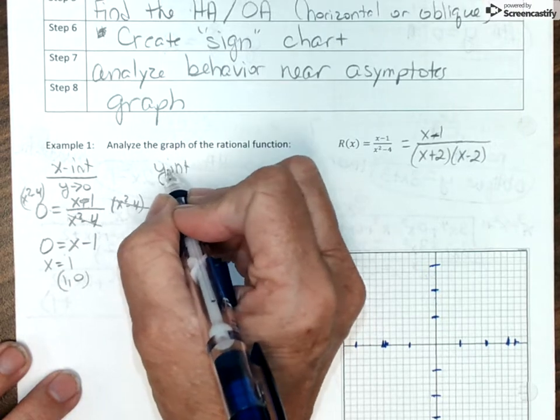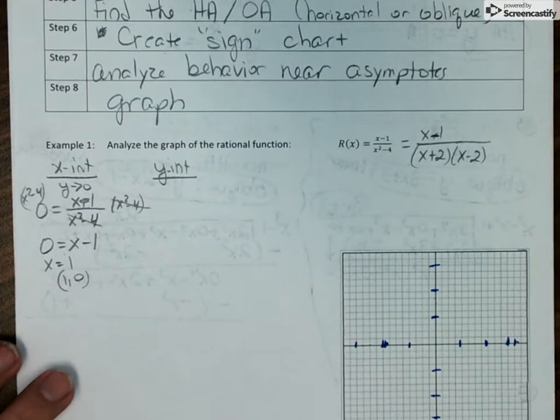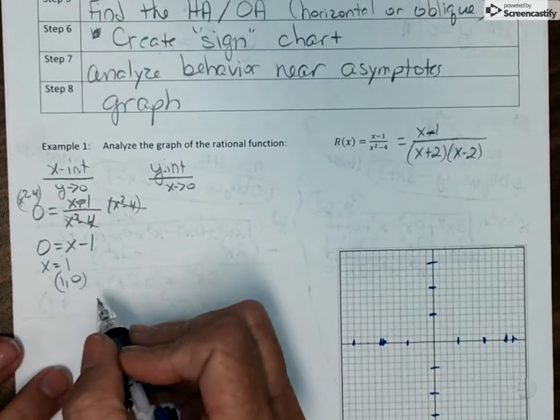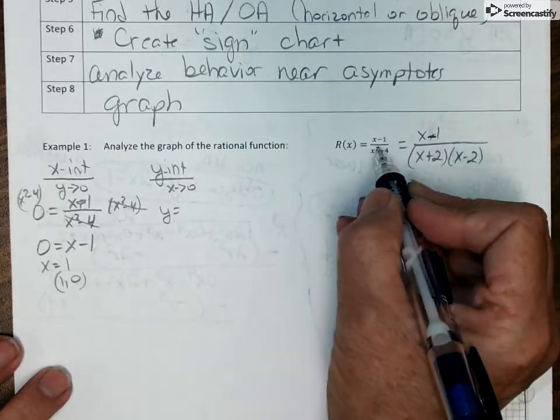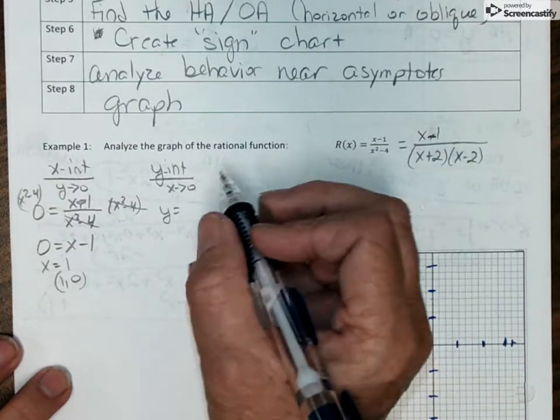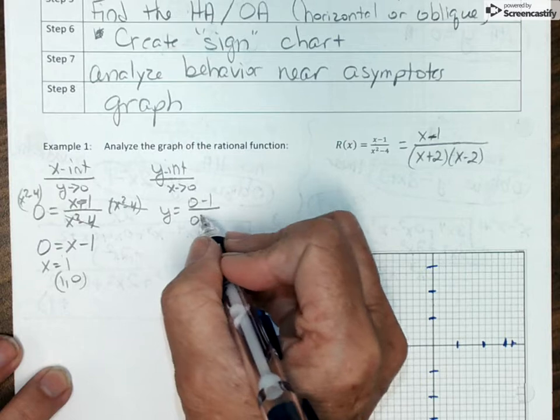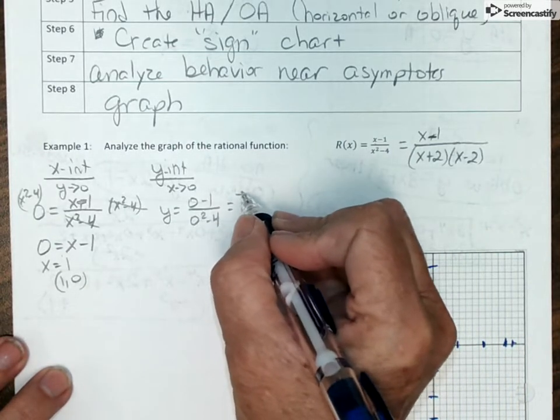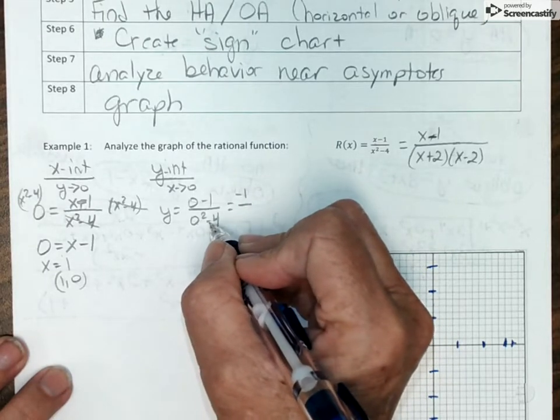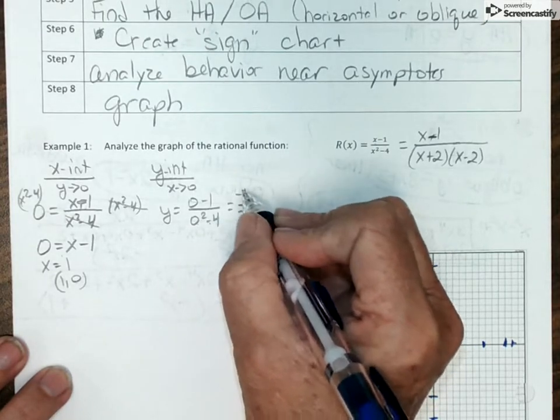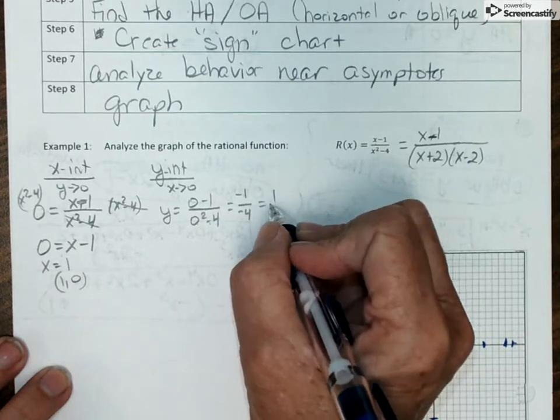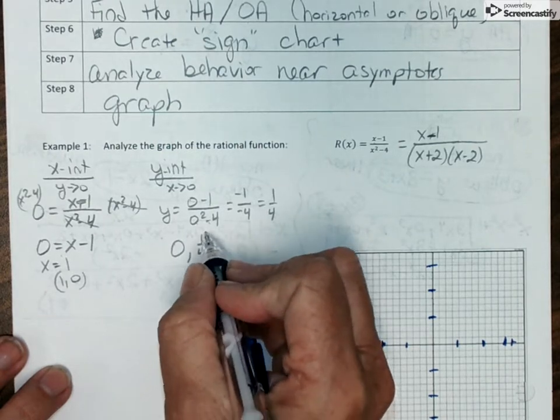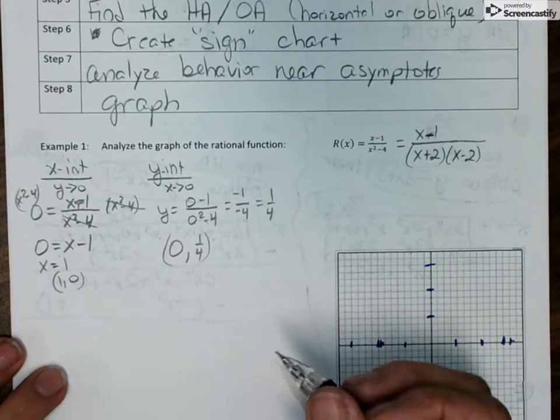We now need to find our y intercepts. Y intercepts are found by setting x equal to 0 and solving. So I've got y equals, and again, I'm simply going to put zeros in wherever there is an x. So 0 minus 1 over 0 squared minus 4. So the numerator is negative 1. 0 squared is 0, minus 4 is a negative 4. And negative divided by a negative is actually a positive. So my y intercept is at the x value of 0, y is 1 fourth.